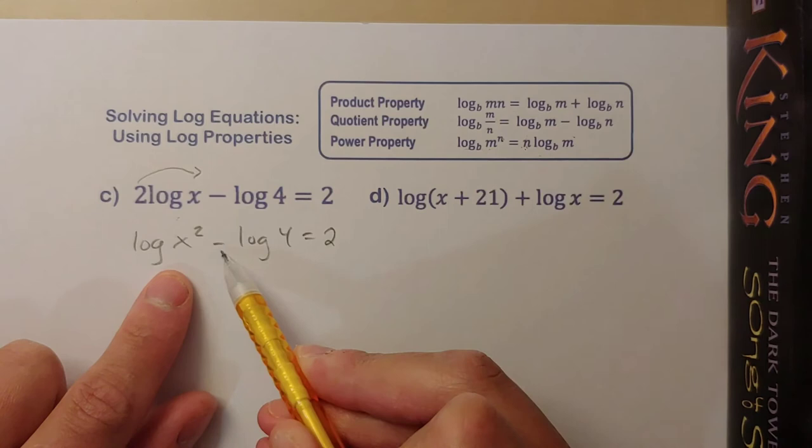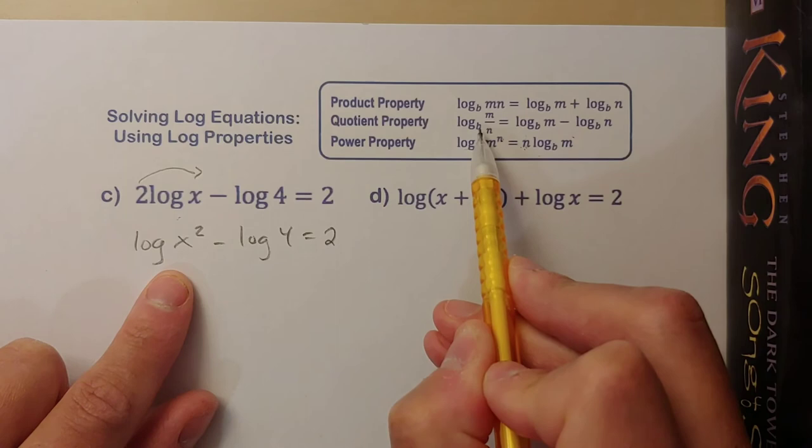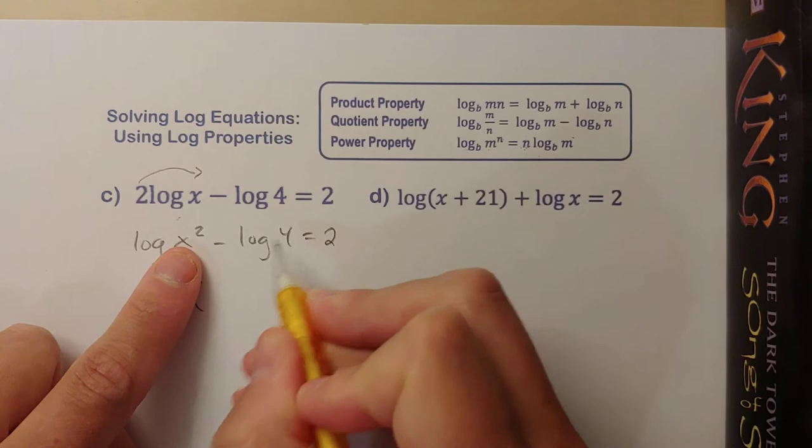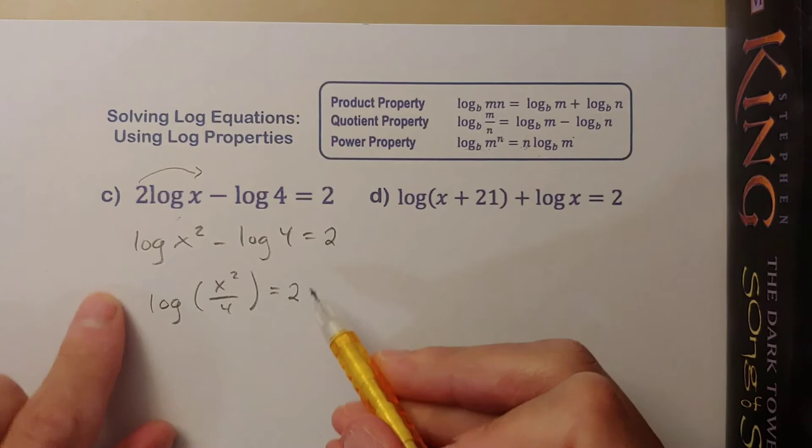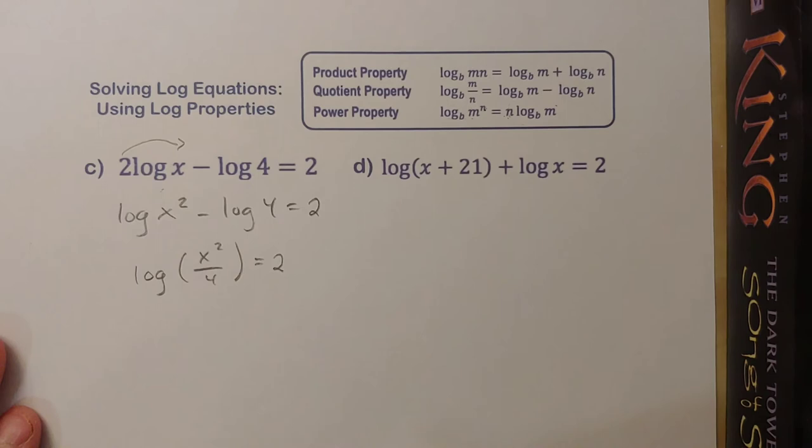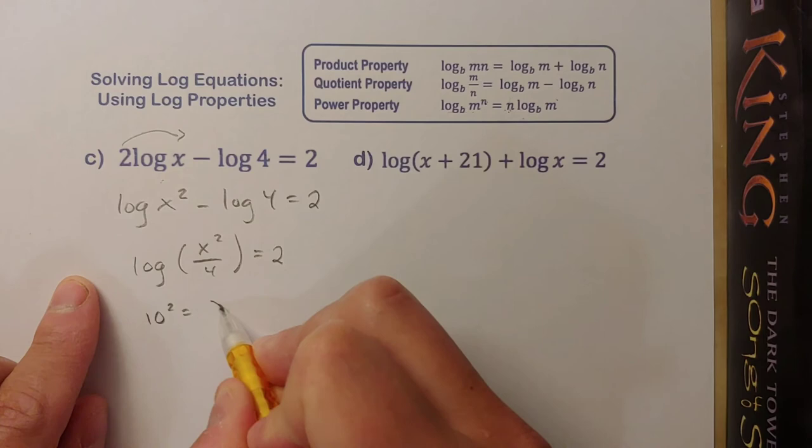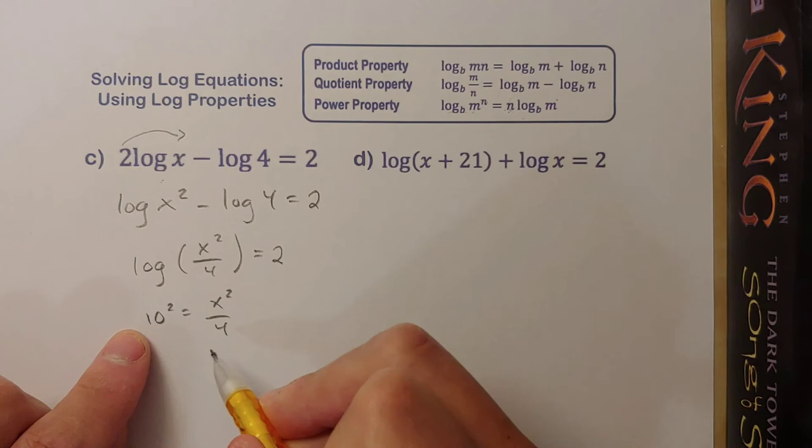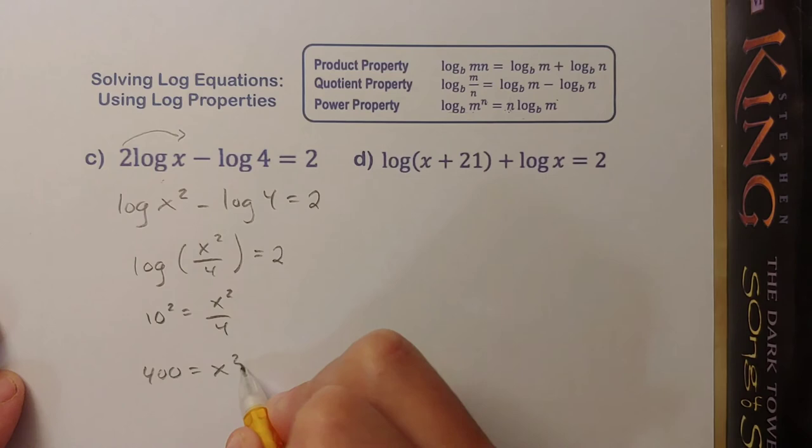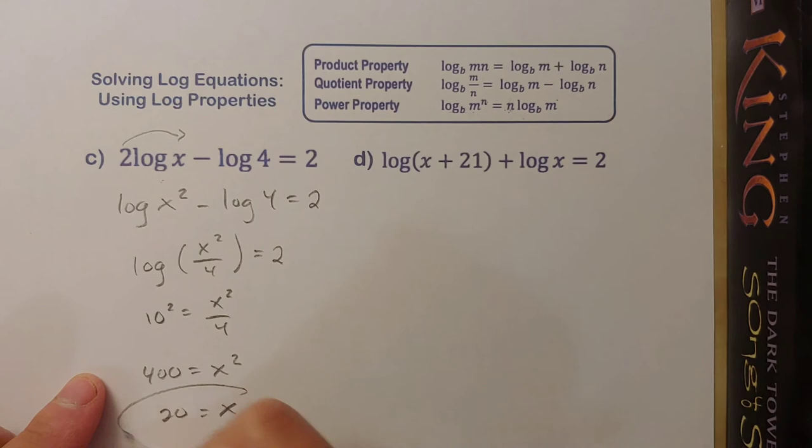Now I have two logs, no coefficients, they have the same base, they're being subtracted. I can use the quotient property to combine these two logs together. Rewriting this, I have log base 10 of x squared divided by 4 equals 2. Now I've got a single log equaling some value. I can convert this to exponential form and solve. 10 to the power of 2 equals x squared over 4. 10 squared is 100. We're going to multiply both sides by 4, so we get 400 on the left and x squared on the right. Square rooting both sides, we'll get a 20.